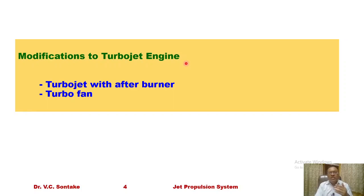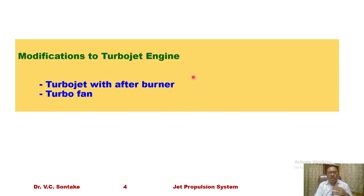The two limitations of turbojet engines are: number one, turbojet engines when operating at lower speeds and lower altitude have very high specific fuel consumption. Number two, since the entire thrust is produced by high temperature gases in the propelling nozzle, the noise level of the turbojet engine is very high. To overcome these two limitations, some modifications are proposed, resulting in two variants of the turbojet engine: turbojet with afterburner and turbofan.